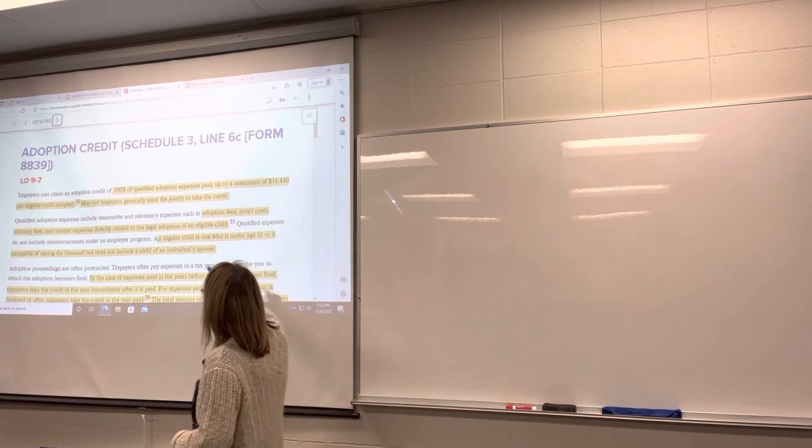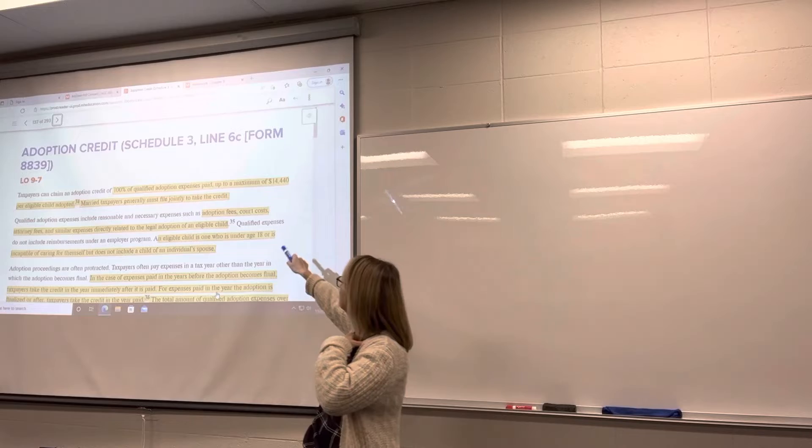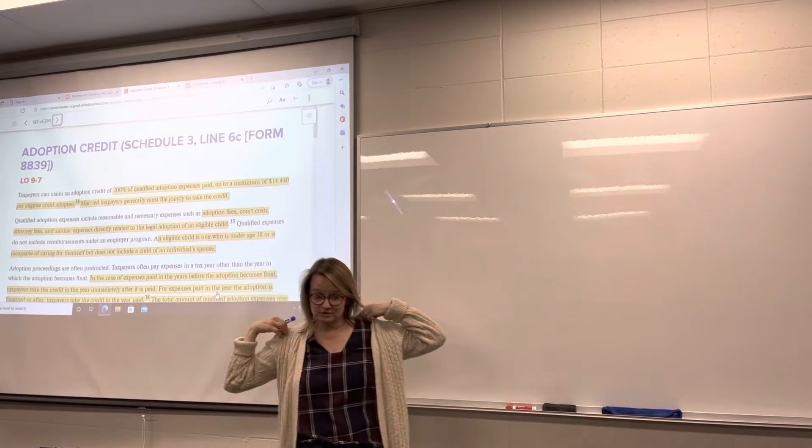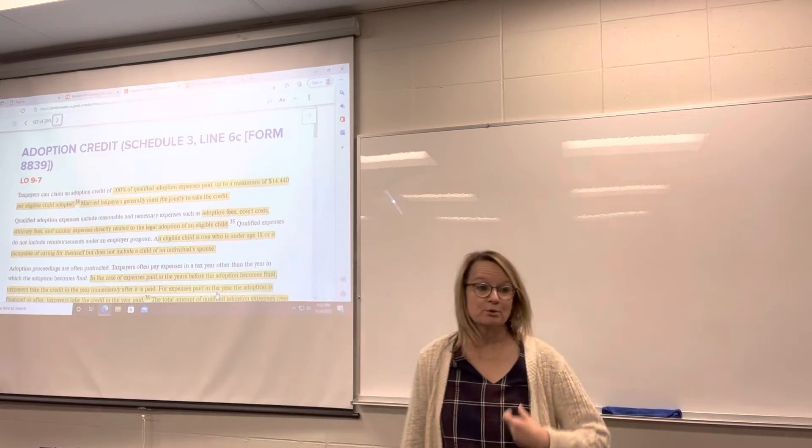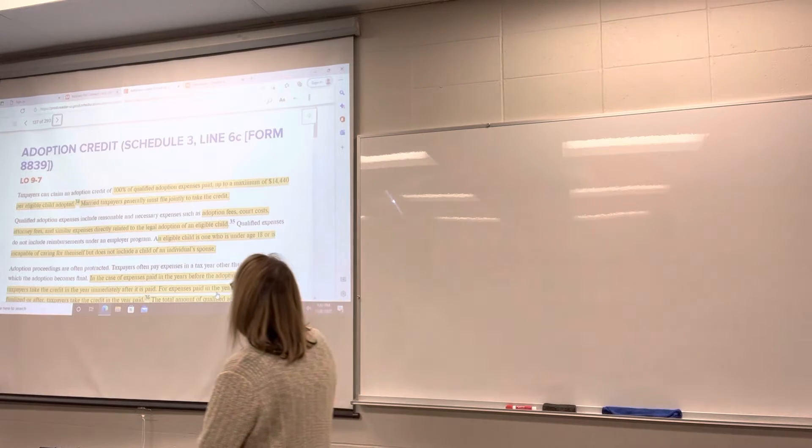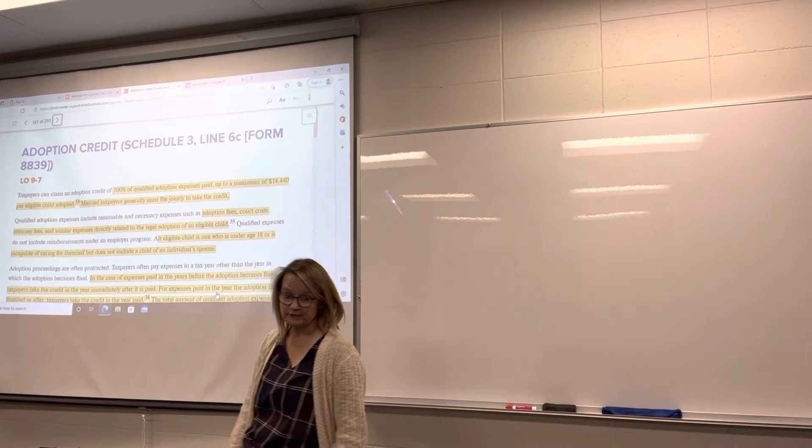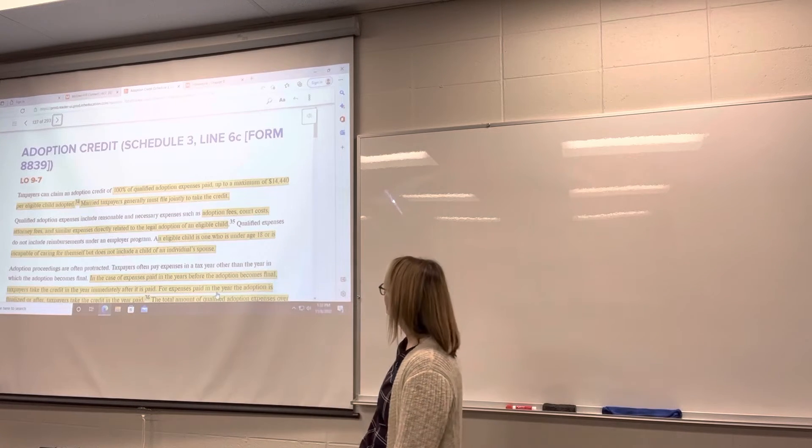You get 100% of the qualified adoption expenses up to a maximum of $14,440 per child adopted. If you're married, you have to file jointly in order to take it, so you can't be married filing separately.